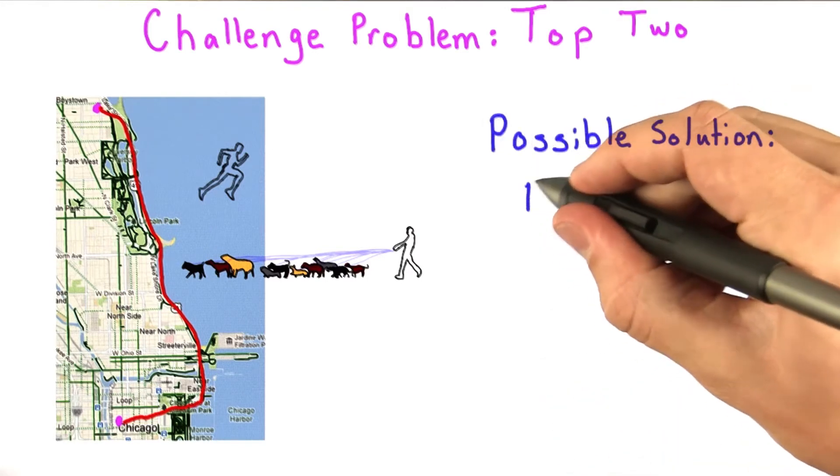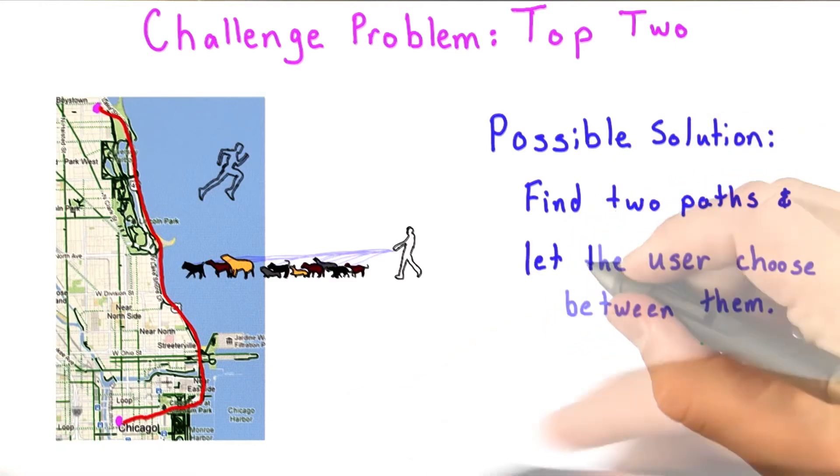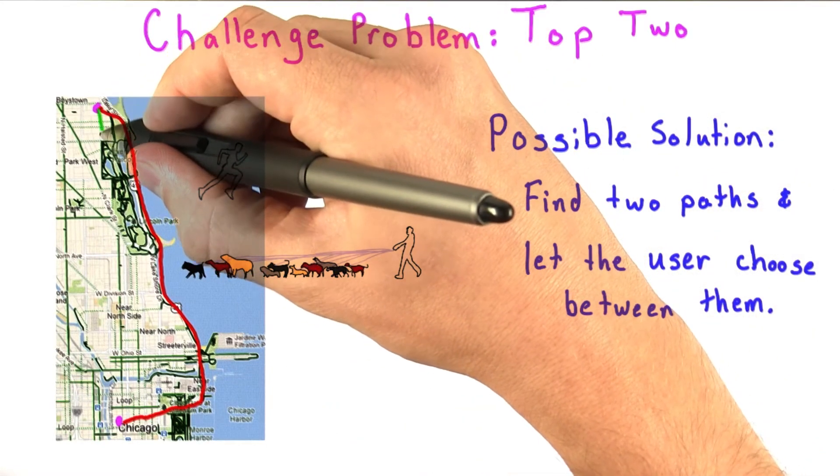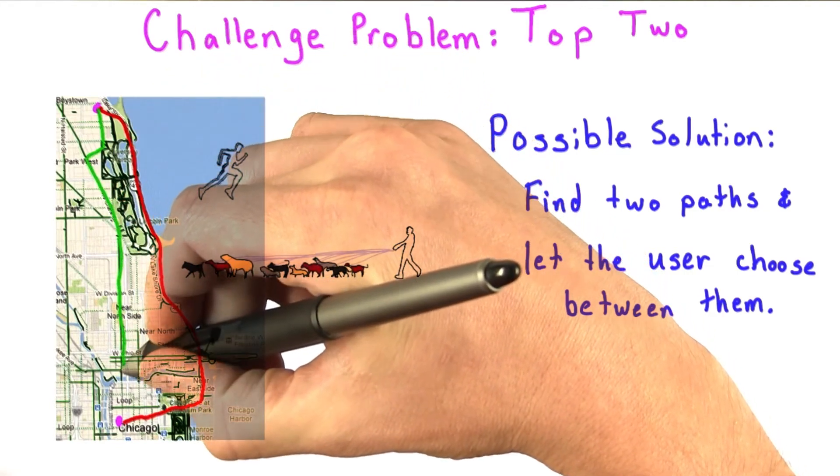One possible solution is to find two paths, and then let the user choose between the two options. If you're curious, I ended up taking a route down Clark Street and Wells Street to work.